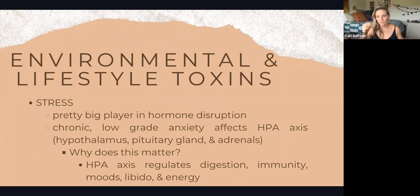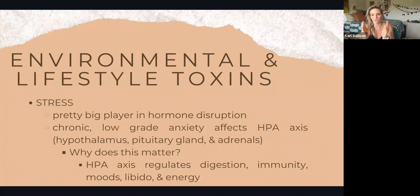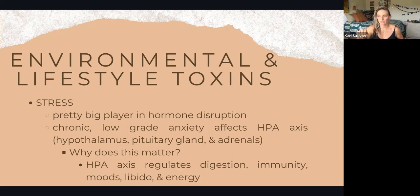Stress is huge. We know it's not great, but we also need stress. When we have chronic low-grade anxiety — low-level stress all the time — that affects our HPA axis: the hypothalamus, pituitary gland, and adrenals. That is your stress signaling system. It regulates digestion, immunity, mood, libido, and energy. Chronic low-grade stress will absolutely affect your hormones — that is a flow blocker.